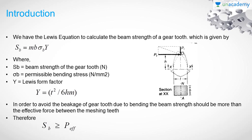In the lecture about the Lewis equation and the bending beam strength of the gear tooth, we found the value for Sb. The beam strength is given by Sb equals Mb into Sigma B into Y, where Sb is the beam strength of the gear tooth in Newtons, Sigma B is the permissible bending stress in N/mm², and Y is the Lewis form factor given by Y equals T² by 6HM, where T, H and M are the dimensions of the gear tooth with the involute profile.